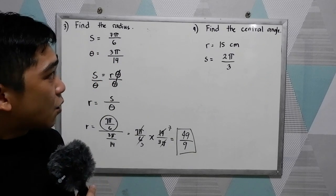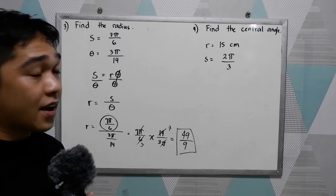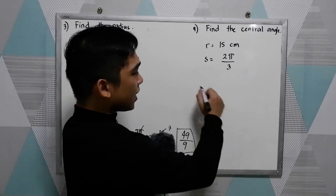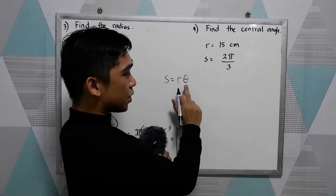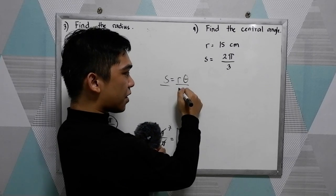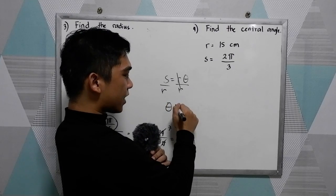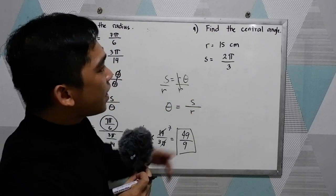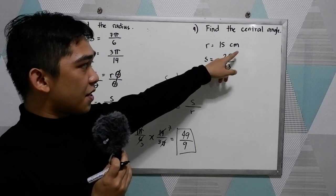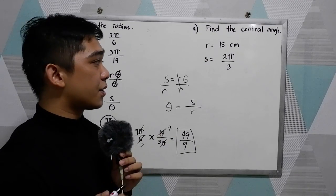Now in our last example, find the measure of the central angle. So our formula is S is equal to R theta. We're going to find theta so we need to divide by R. Now we have theta is equal to S over R. Given the radius is equal to 15 centimeters and the arc length 2 pi over 3.